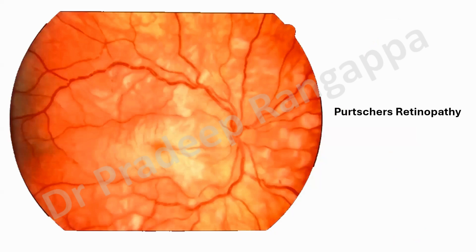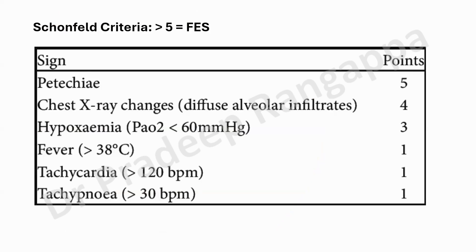Schönfeld's criteria uses a scoring system: score >5 diagnoses fat embolism syndrome. Petechiae scores 5 points, chest X-ray changes score 4 points, hypoxemia scores 3 points, and other features like tachycardia and tachypnea score lower. So if you score more than 5, you can call it fat embolism syndrome.